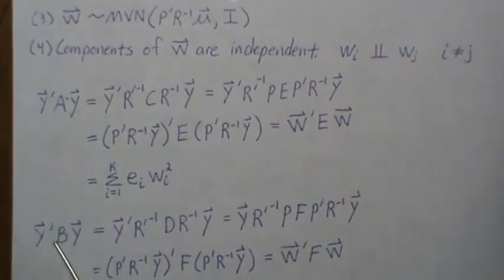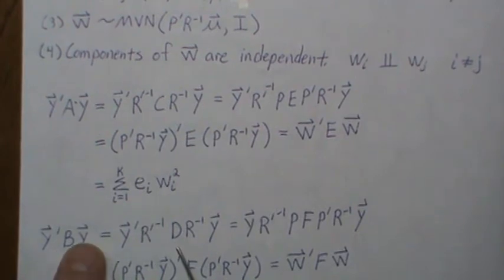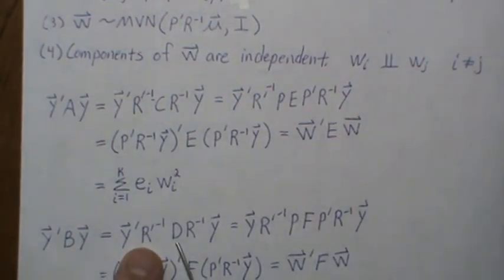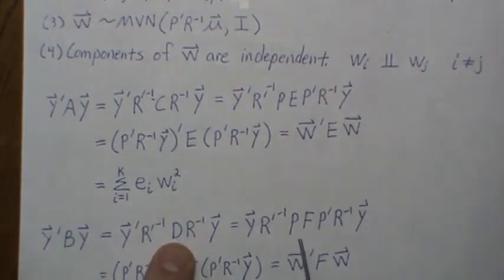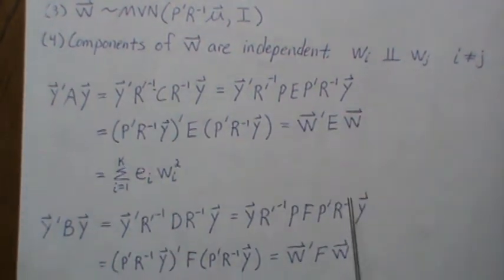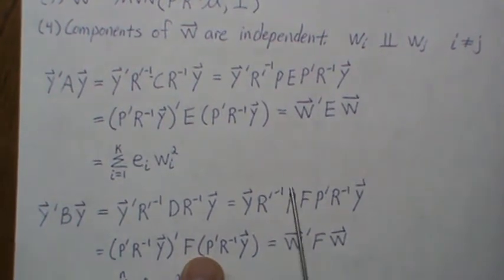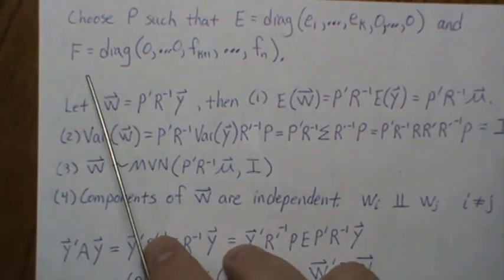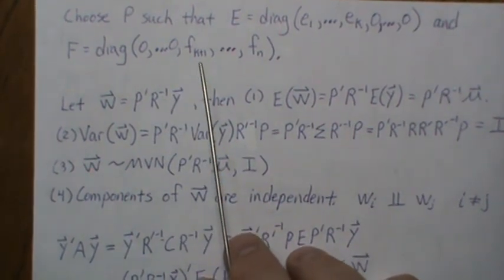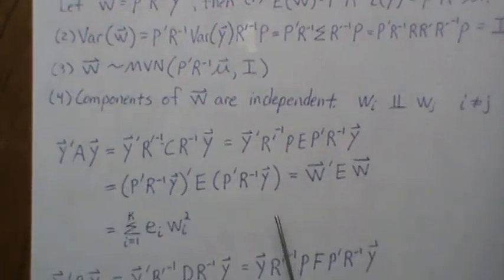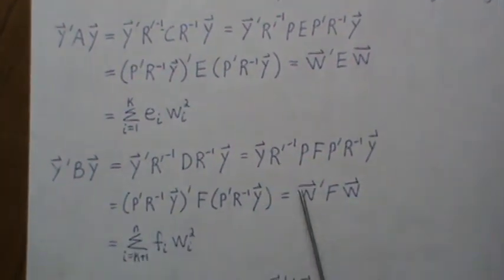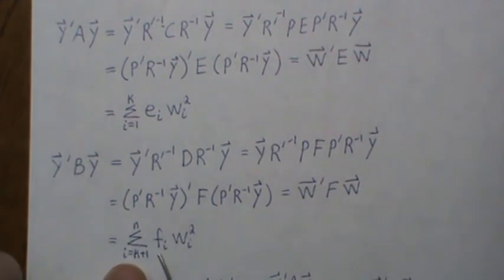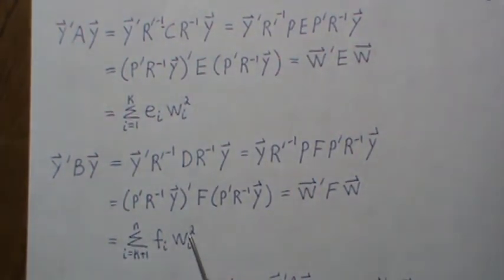Now let's look at B, Y' B Y. Now B can be back-solved for this, R'^(-1) D R^(-1), but D was PFP'. And again, this piece was W, like before. We put brackets around it and then we back-transpose that and we get this. So really this is W' F W, but F was a diagonal matrix, and nonzero at K plus one. So this becomes K plus one to N, F_i W_i squared.